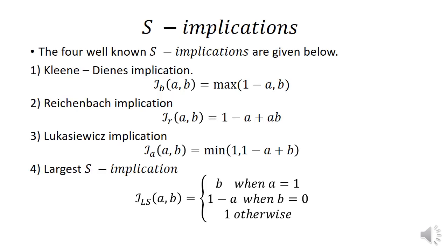S-implications: the four well-known S-implications are as follows. First, the Kleene-Dienes implication, defined as I(A,B) = max(1 − A, B). Second, the Reichenbach implication, defined as I(A,B) = 1 − A + AB. Third, the Lukasiewicz implication, defined as I(A,B) = min(1, 1 − A + B). Fourth, the Largest S-implication: I_LS(A,B) = B when A = 1, 1 − A when B = 0, and 1 otherwise.